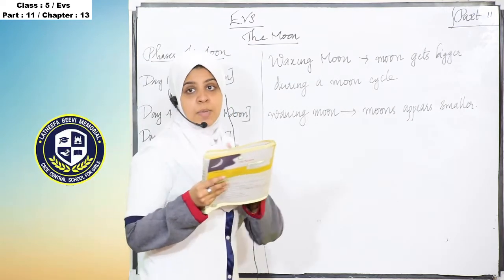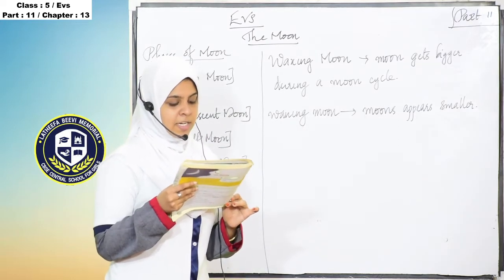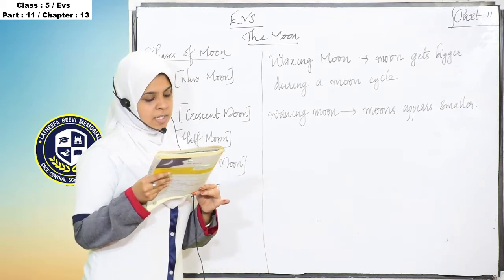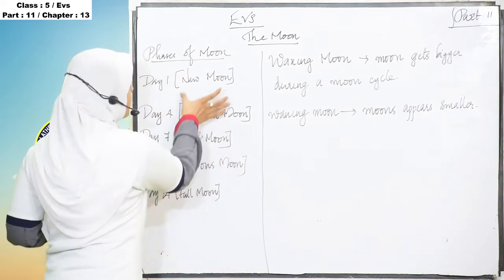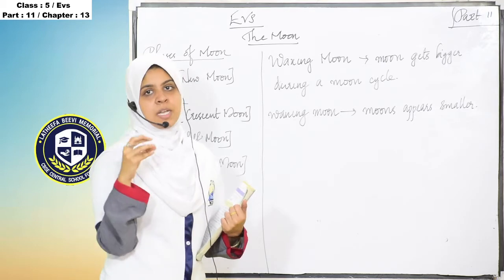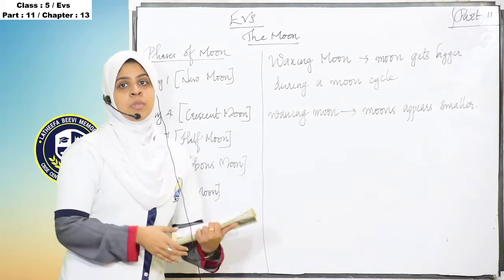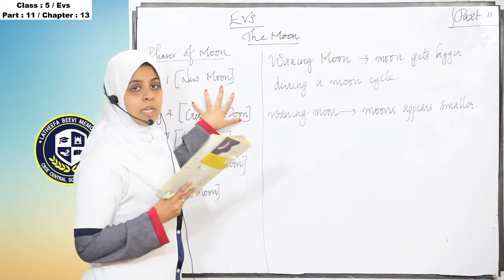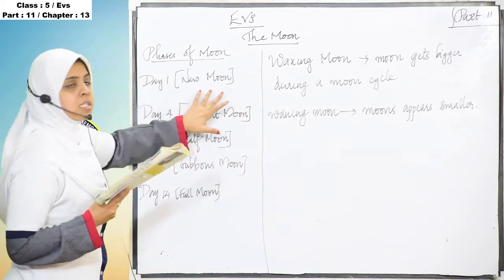In your textbook you can see the images of new moon. On this day the moon is not visible from the earth, as the illuminated portion of the moon faces away from the earth and only the dark half faces the earth. This phase of the moon is called new moon — that is day 1.